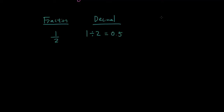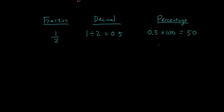Now, to go from the decimal to a percentage, all you have to do is multiply the decimal by 100, and you get the percentage, which is 50. Why do you multiply it by 100? Because the word percentage means out of 100. So what's half of 100? Half of 100 is 50, so that's why you do 0.5 times 100 — because 0.5 means the same thing as a half, and half of 100 is 50.